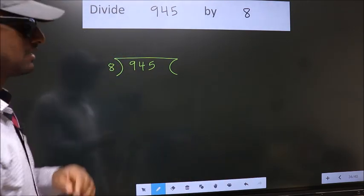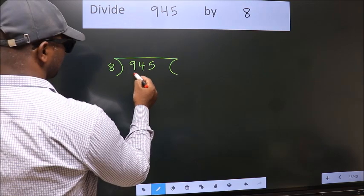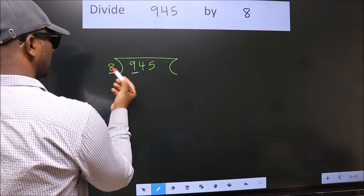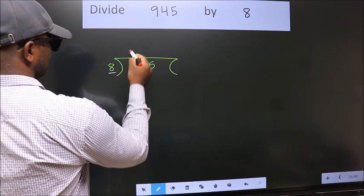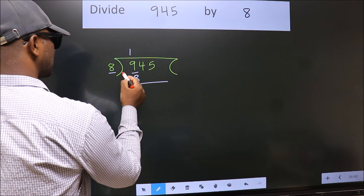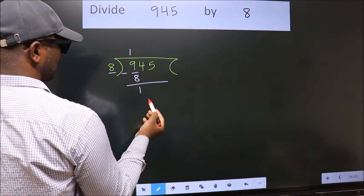Next, here we have 9, here 8. A number close to 9 in the 8 table is 8 once 8. Now we should subtract. We get 1.